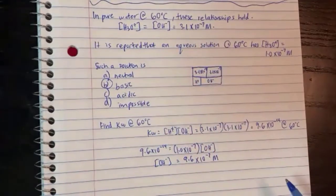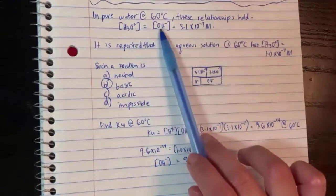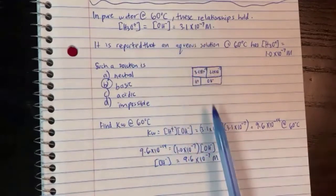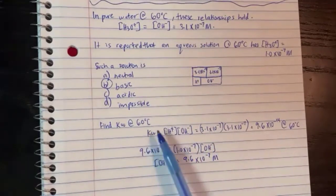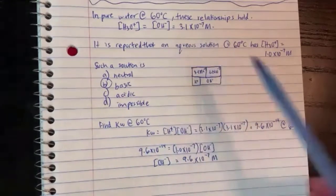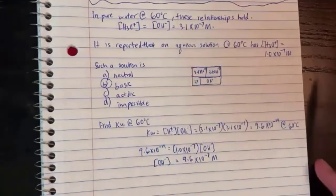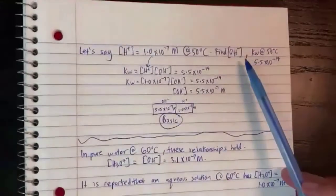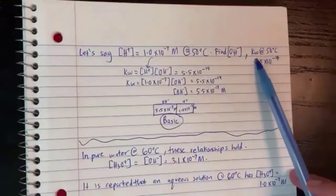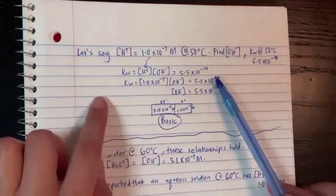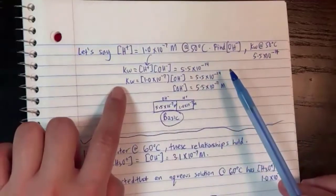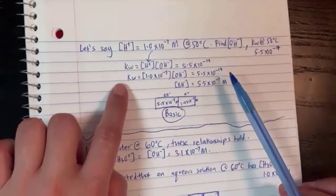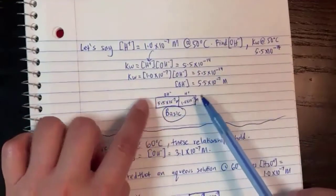Sometimes they give you KW; sometimes they just give you the pure water relationship. Either way you can figure it out. If they gave you the pure water numbers, you can find KW. If they gave you KW, you can find the pure water numbers. It works both ways.